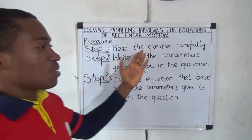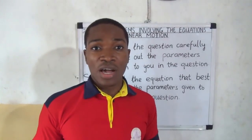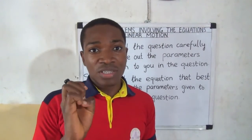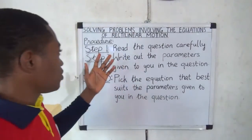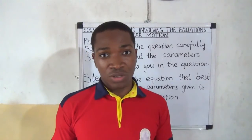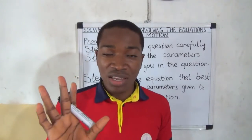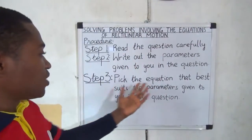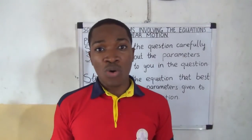This is the procedure. The first step is to read the question carefully, in order to bring out the parameters that are stated in the question. The second step, you write out the parameters given in the question. And from those parameters, you will be able to select the appropriate equation. The third step, you pick the equation that best suits the parameters given in the question.